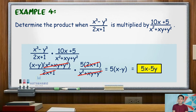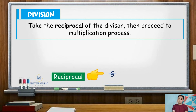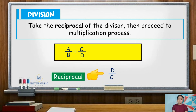After multiplying rational expressions, we will now proceed to dividing rational expressions. When performing this operation, we need to take the reciprocal of the divisor and then proceed to the multiplication process. To illustrate, the quotient of the rational expression a over b divided by c over d, where a, b, c, and d are polynomials, is given by ad over bc.